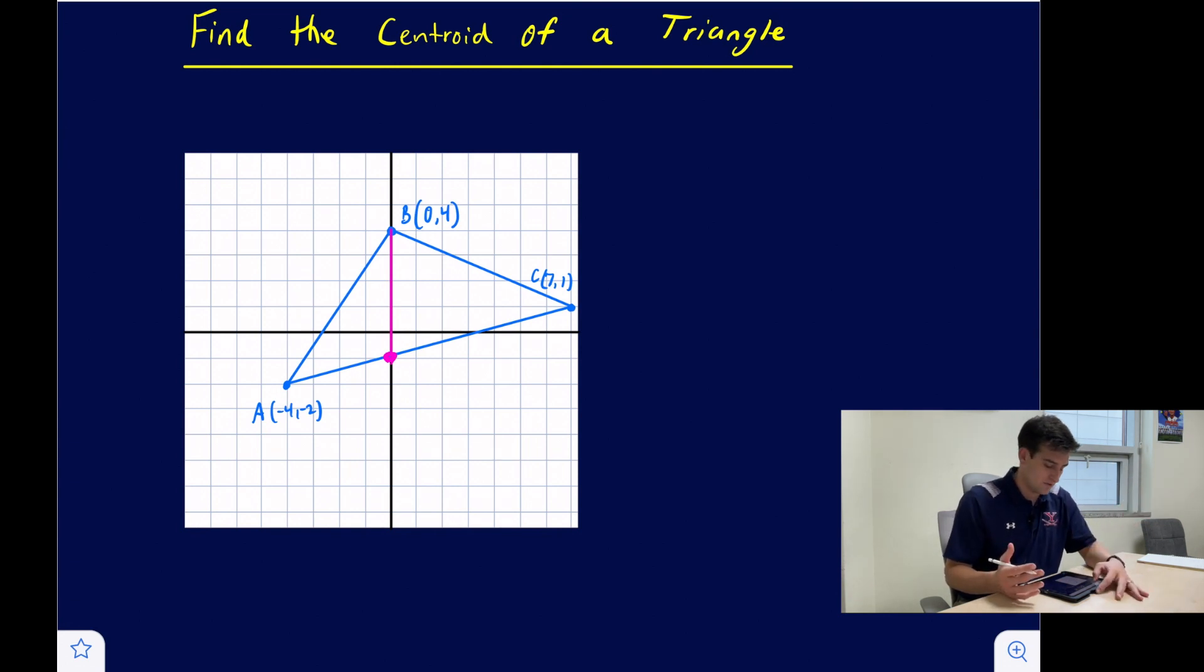So I'm not going to be able to use that segment. Now let's look at C. We draw a horizontal line and it goes over here to side AB, and that could be the midpoint. So now let's check that.